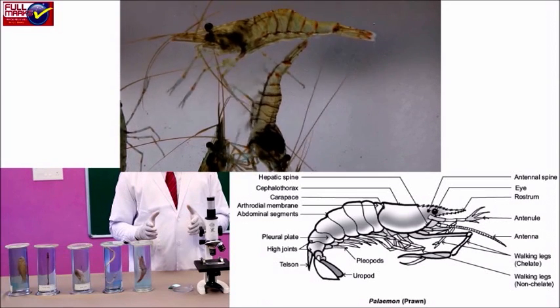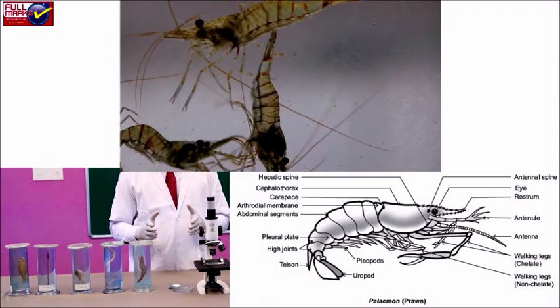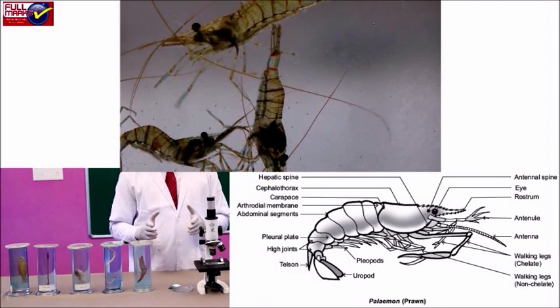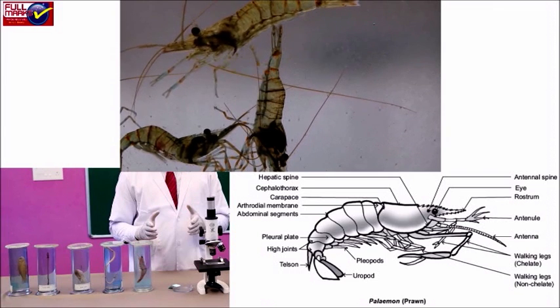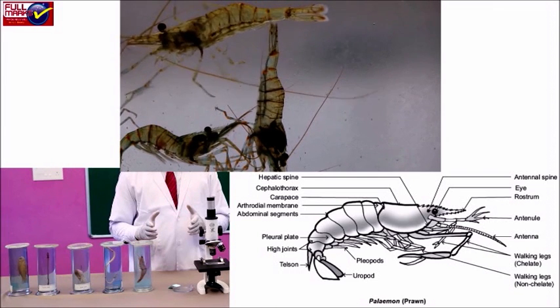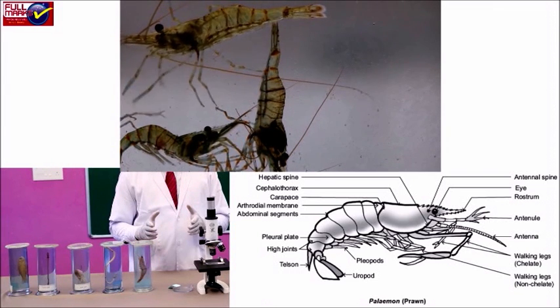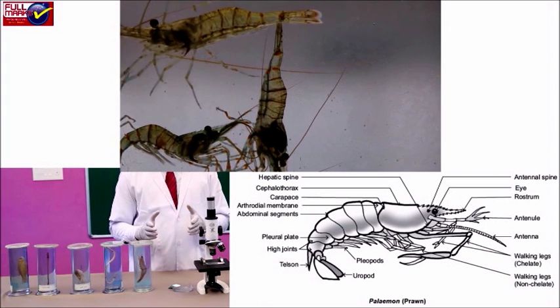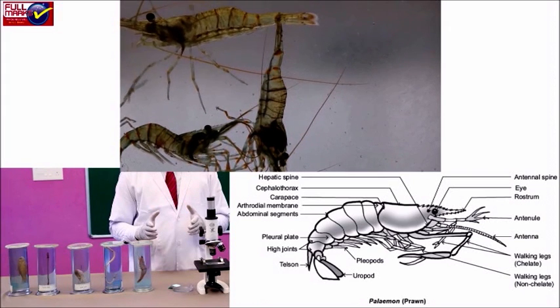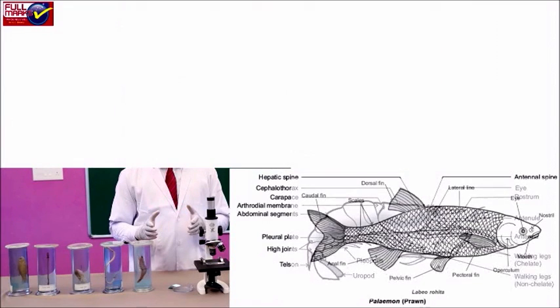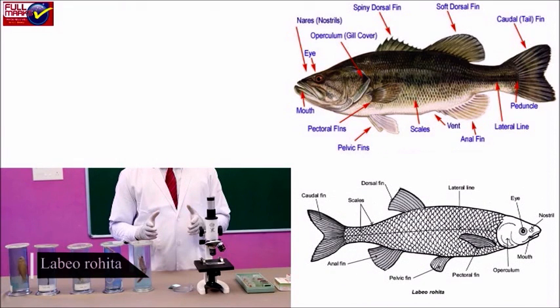First five pairs are used for swimming and are called pleopods. The sixth pair of abdominal appendages is called uropod, which along with telson form the tail fin. Labeo rohita or bony fish.